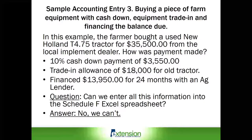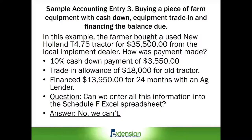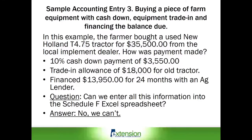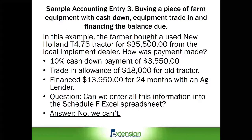In this example, the farmer bought a used New Holland T4.75 tractor for $35,500 from the local implement dealer. The farmer wrote a check for $3,550, which was a 10% down payment on the tractor purchase. The local implement dealer offered a trade-in allowance of $18,000 on the farmer's current tractor. The balance due of $13,950 was financed for 24 months through the farmer's ag lender.